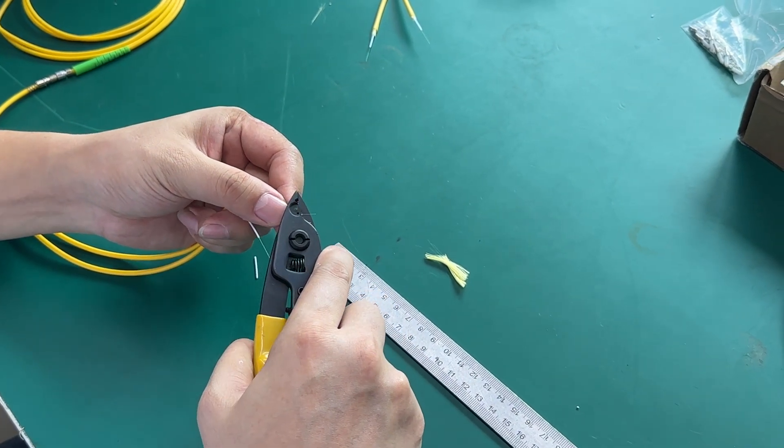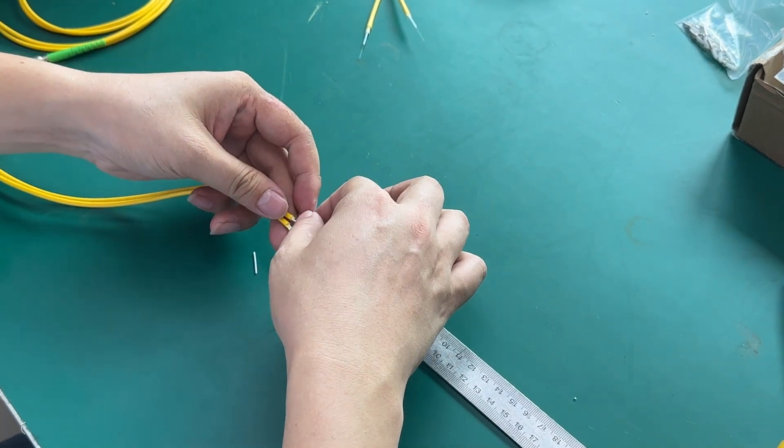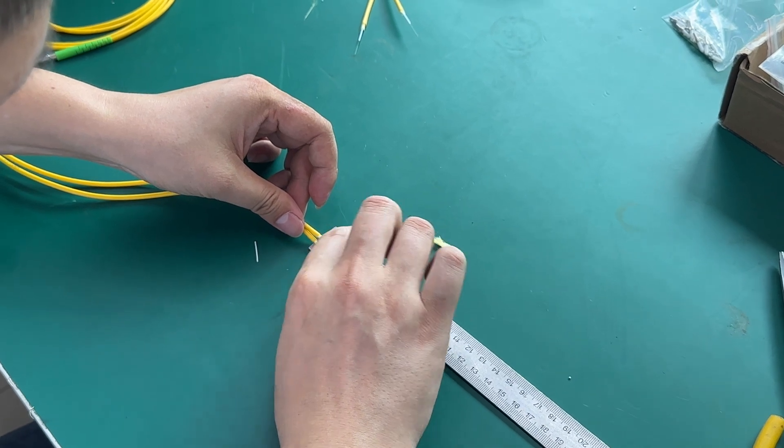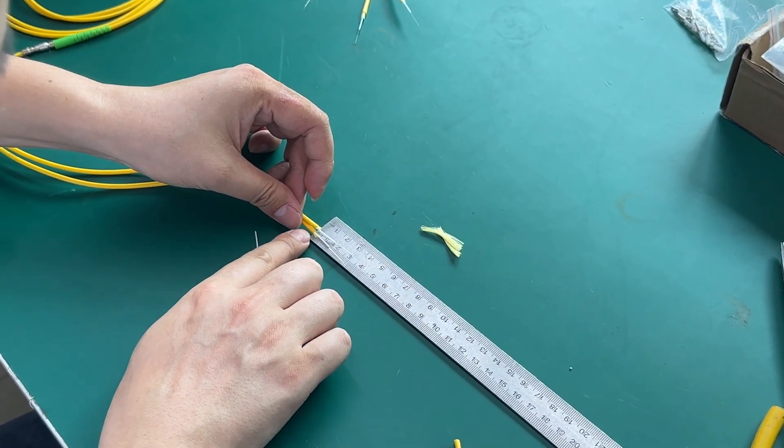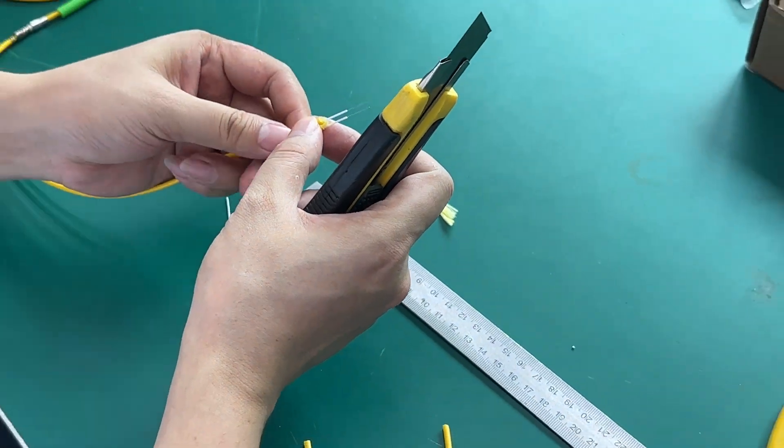If you cannot strip perfectly the first time, you can strip twice. Last, after finishing, we use the ruler to measure the length again. Make sure the total length is 3 centimeters.